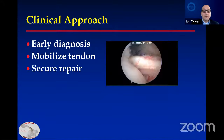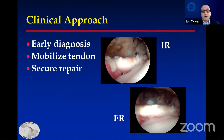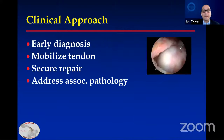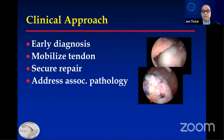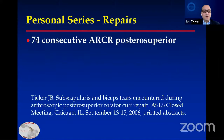Then you want to do a secure repair, and I'll go through that in some steps. This is a left shoulder repair viewed from posterior, the same repair viewed from anterior. I use a single row repair technique and tie knots. This is another repair in internal and external rotation — you want to stress your repair to make sure it's secure. Then you address associated pathology: this is a supraspinatus and infraspinatus repair that you secure down.